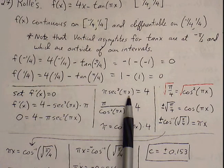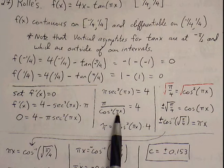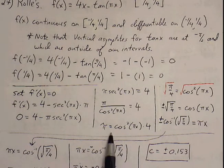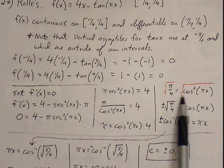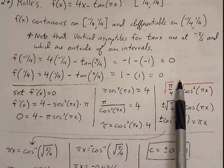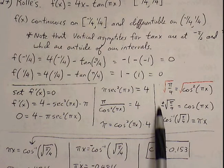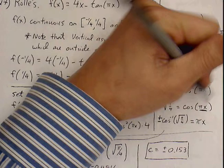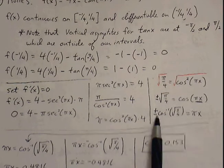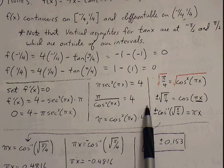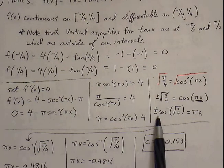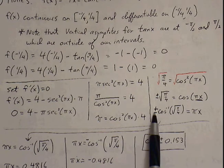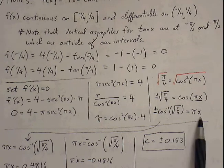Setting pi secant squared of pi x equal to 4, I convert secant squared to cosine squared. Multiplying cosine squared on both sides, then dividing both sides by 4, and taking the square root of both sides gives: plus or minus square root of pi over 4 equals cosine of pi x. I need to isolate pi x, so I use inverse cosine. The plus or minus will be pulled outside the inverse cosine, giving: plus or minus inverse cosine of square root of pi over 4 equals pi x.